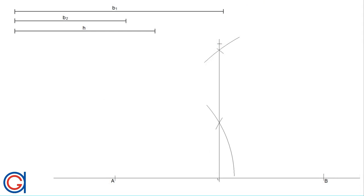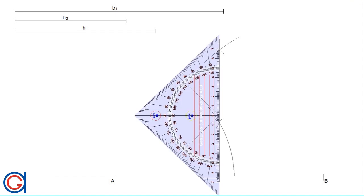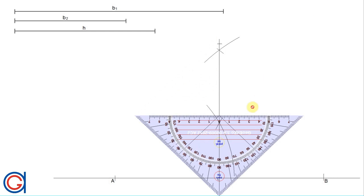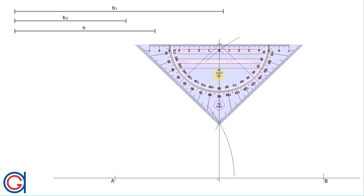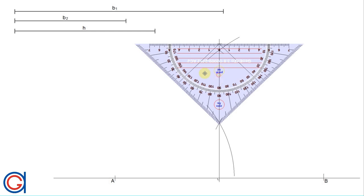The next step is to draw a parallel line to the base through the point at the given height which we have just drawn, as can be seen here. We elongate it on both sides.